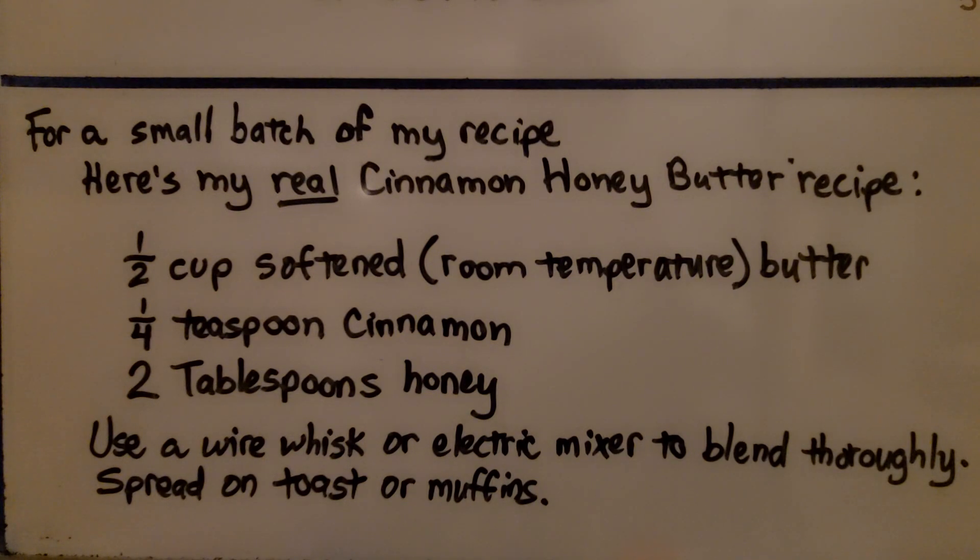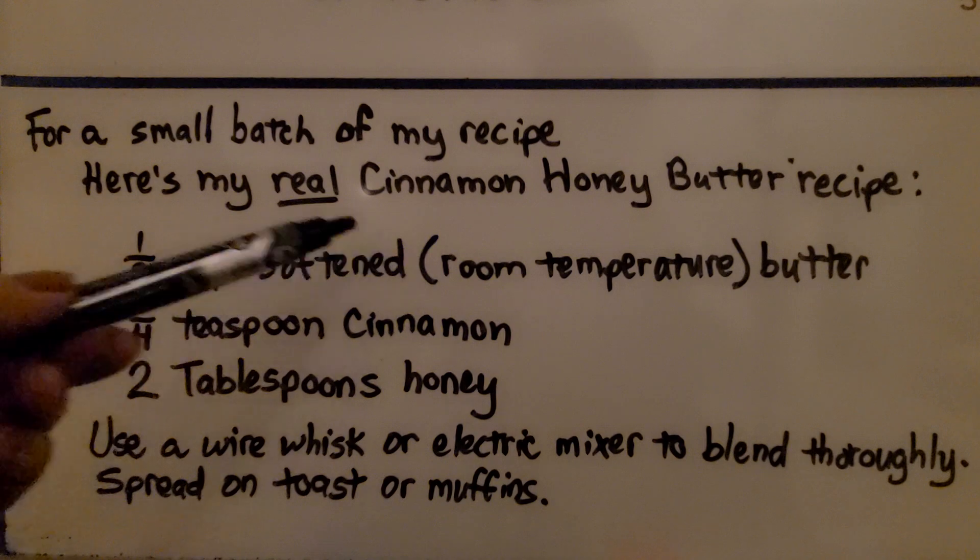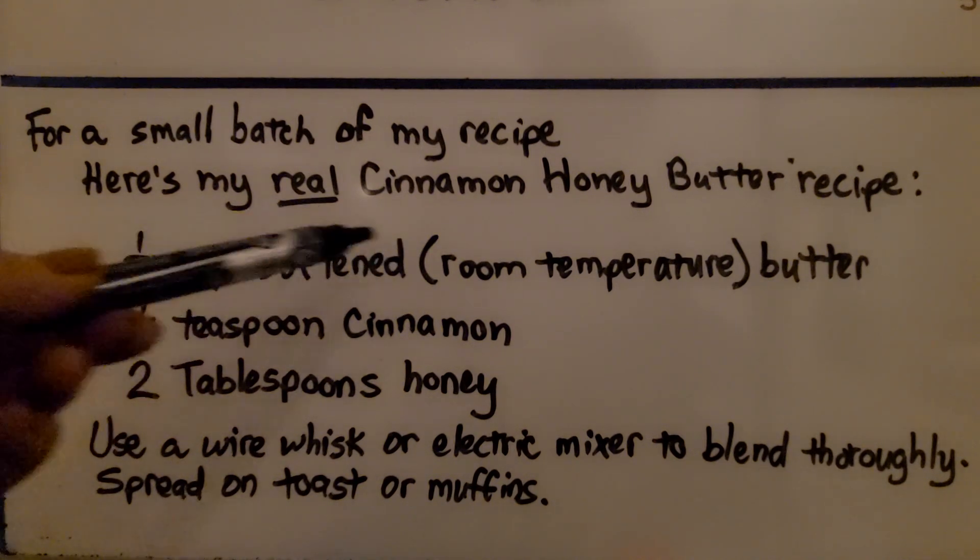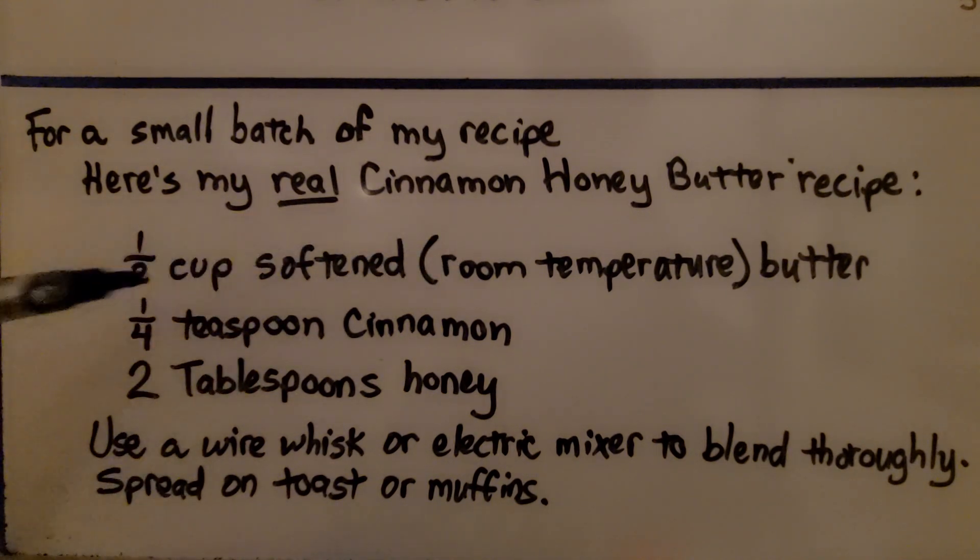If you'd like to try making a small batch of my cinnamon honey butter recipe, use 1/2 cup of softened, that means room temperature butter. You don't want it melted. Use 1/2 cup and then 1/4 teaspoon of cinnamon and 2 tablespoons of honey. Use a wire whisk or an electric mixer to blend it thoroughly. You can put it in a little container, keep it in the refrigerator. You can spread it on toast or muffins or bagels. It's really delicious. I bet you could even put it on pancakes or French toast.